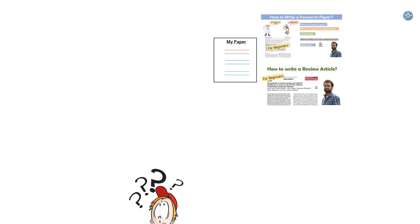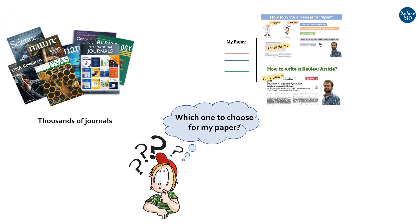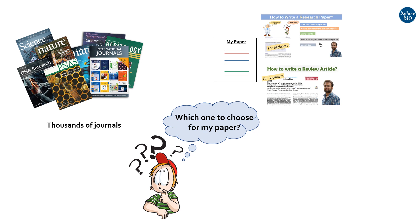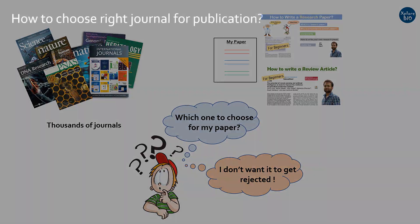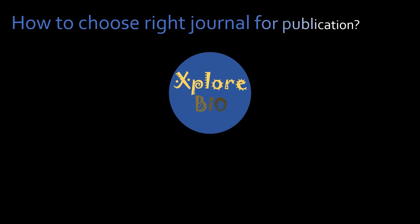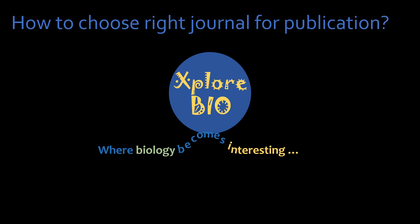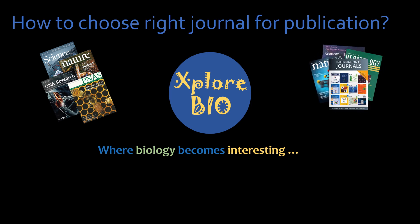You have written a research paper and now you want to get it published. But you do not know where to publish it and you do not know which of the 30,000 scientific journals will be suitable for your work. Also, how to avoid or reduce the chances of rejection. In this video, I am going to share with you some useful criteria to consider while shortlisting a journal and ways to find the right journal for your paper to increase its chances of publication.